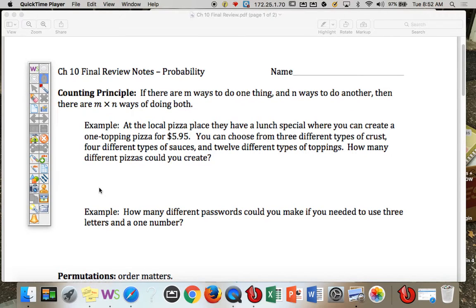Here are a few more notes on chapter 10 when we looked at probability. So one thing we looked at in chapter 10 is the counting principle. If there are m ways to do one thing and n ways to do another, then there are m times n ways of doing both.